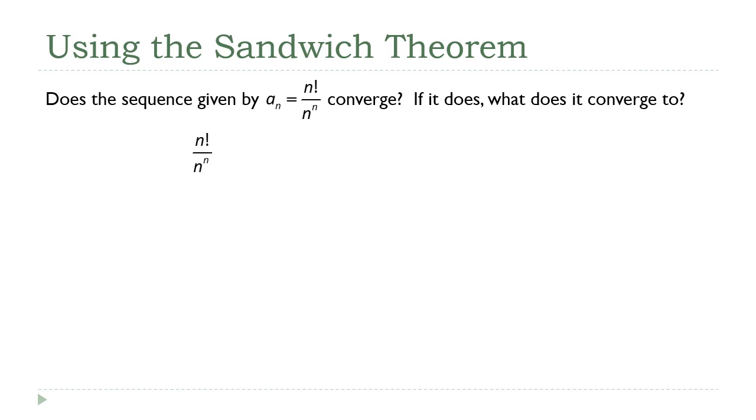That's just our formula for a sub n. So what I'm going to do is I'm going to write out the numerator and denominator. I'm going to make the numerator n times n minus 1 times n minus 2 times all the way down to 2 times 1.